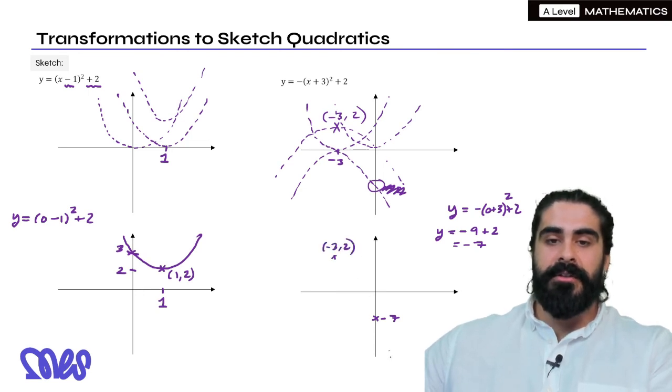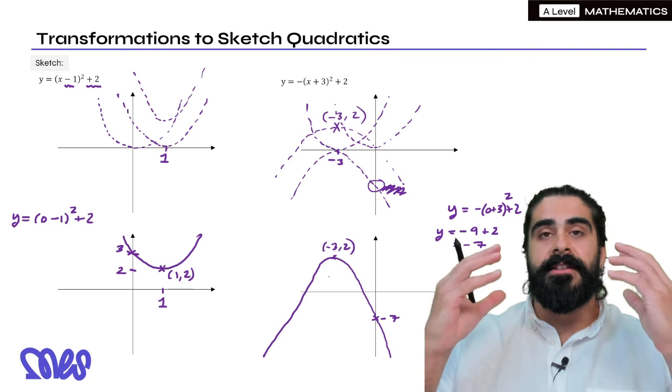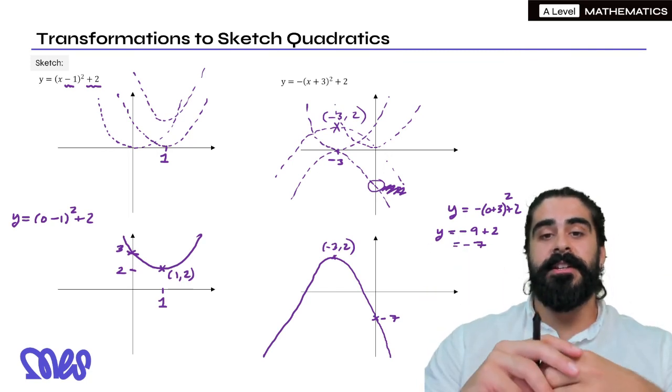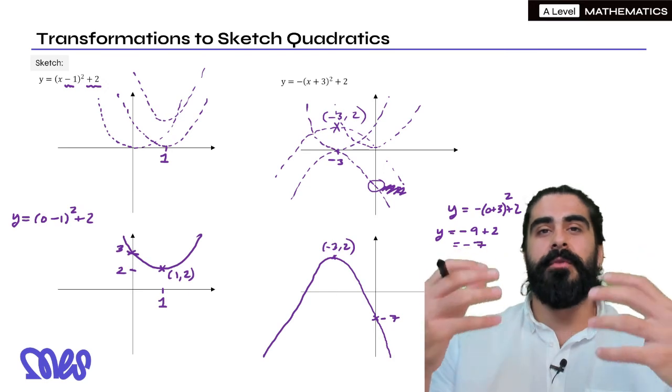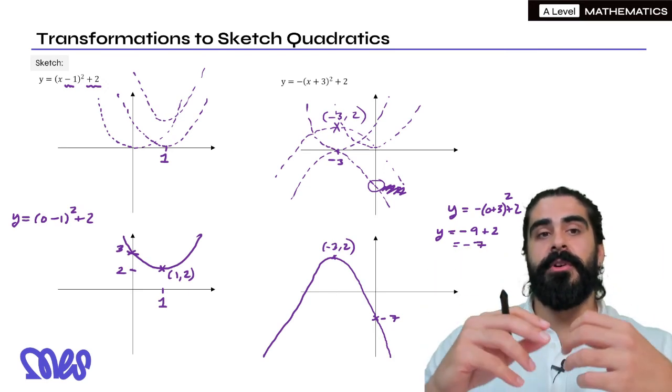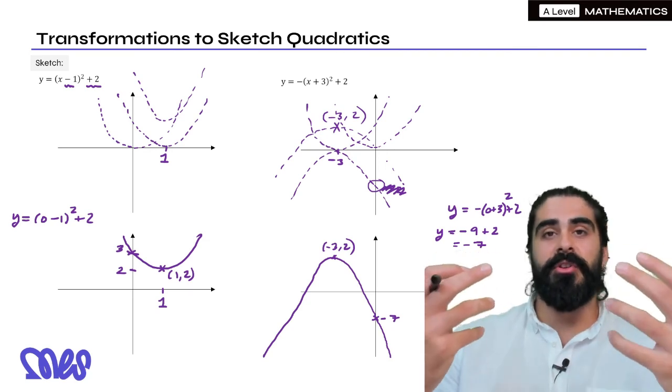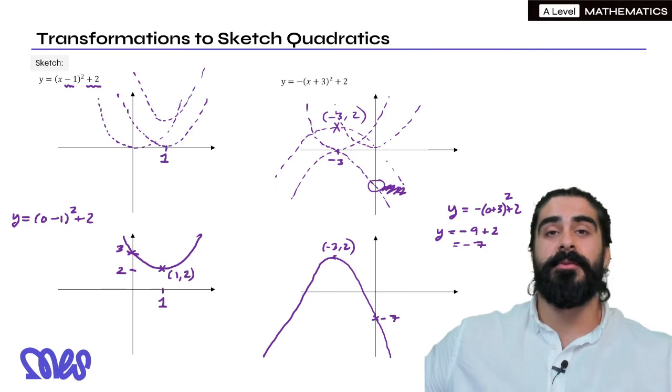So our general sketch will look something like this. And this is the quickest way to sketch quadratics. We could also find the roots if we want. But here for A levels, we don't have to do full sketches like GCSE. We only need the key things on the graph to be able to do a general sketch to then do other calculations that are interesting to us.